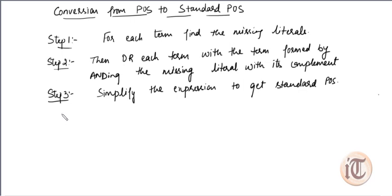In this video we are going to discuss how we can convert a normal POS — that is, Product of Sum — into a standard POS form. What is standard form was already explained in my previous lecture. To convert this POS into a standard POS there are three steps, similar to the way we convert from a normal SOP into a standard SOP.